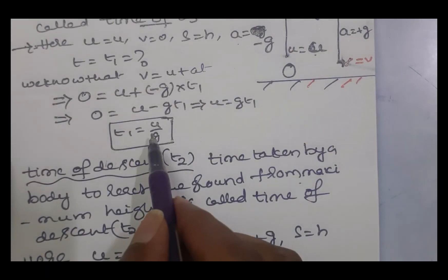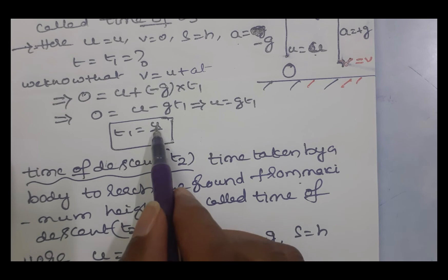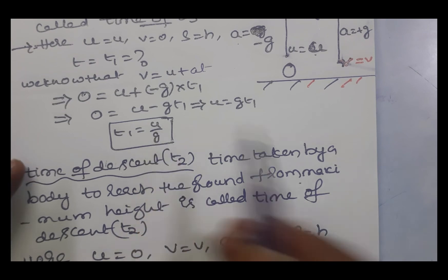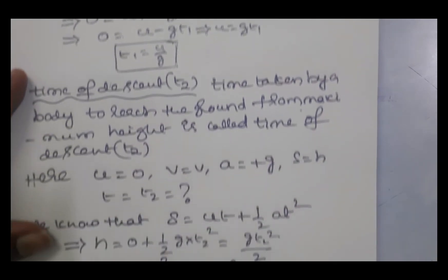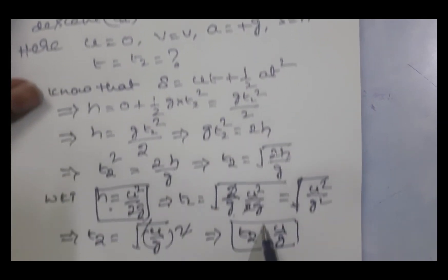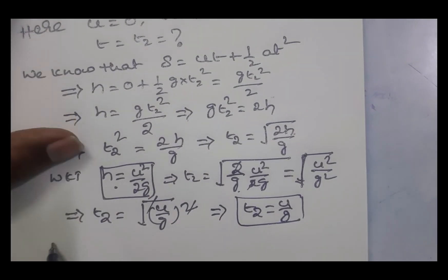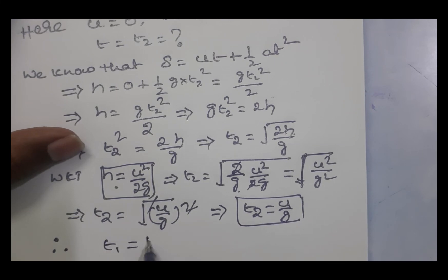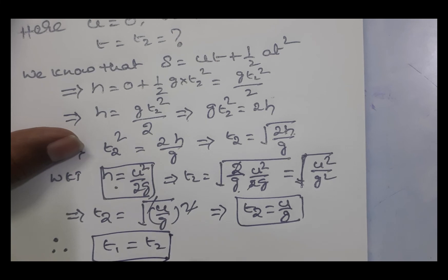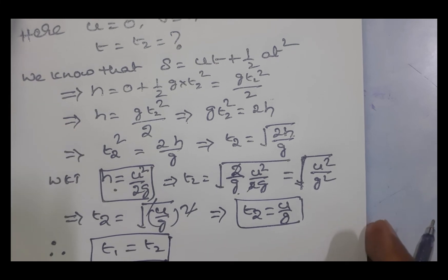Time of ascent t1 = u/g and time of descent t2 = u/g. Therefore t1 = t2, which proves that time of ascent is equal to time of descent.